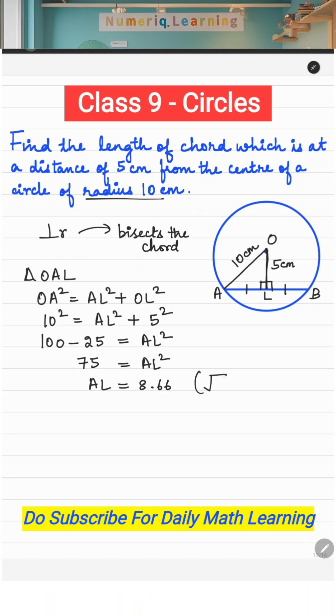Now once you have got AL distance, AB is nothing but twice AL. So it is 2 times 8.66, which will give you approximately 17.32 centimeters. This is the length of the chord.